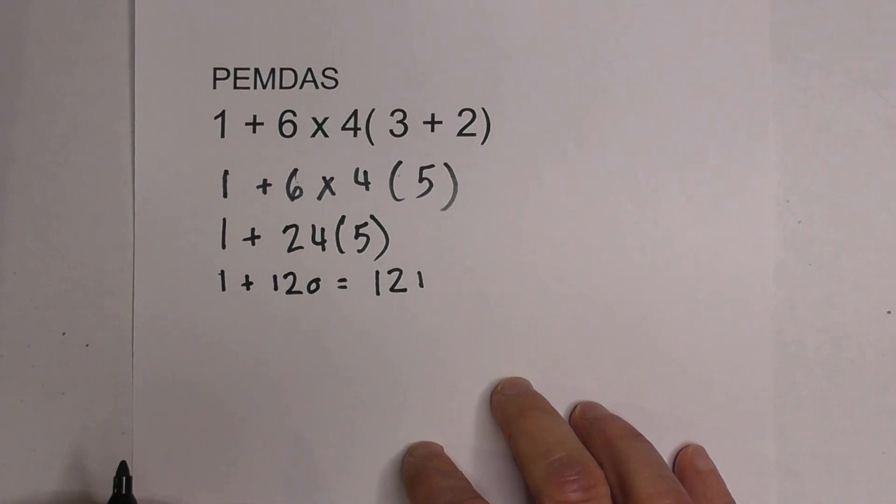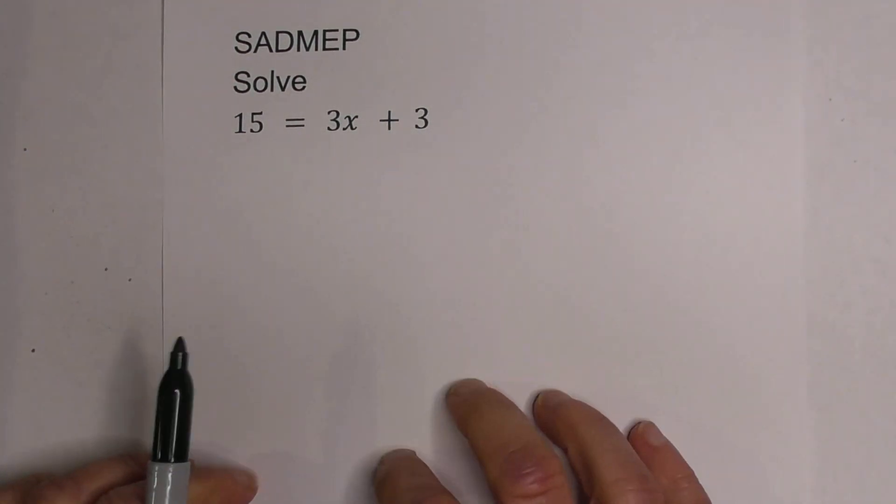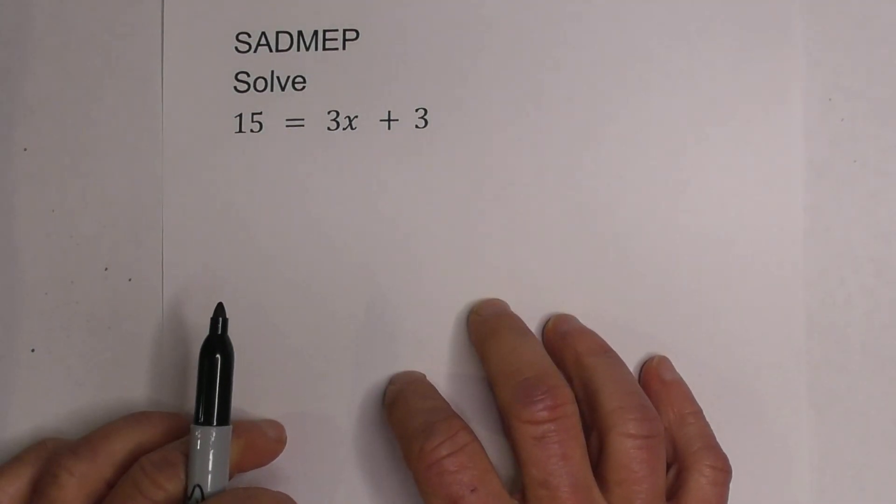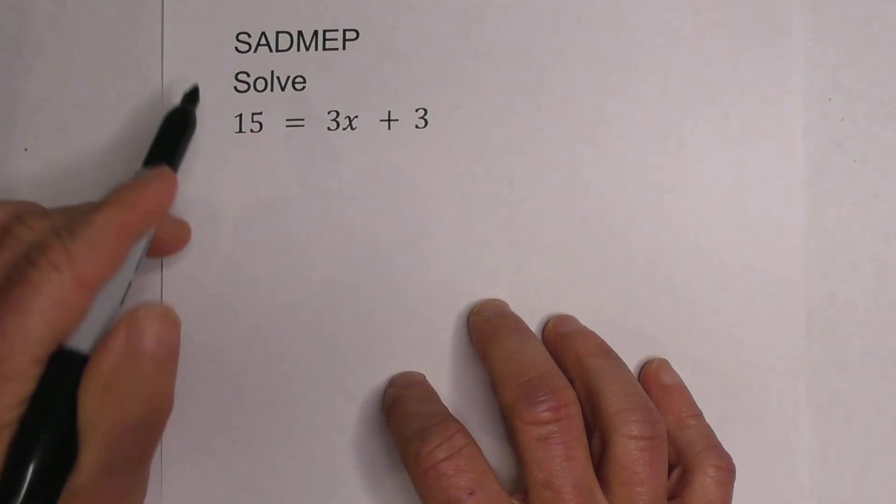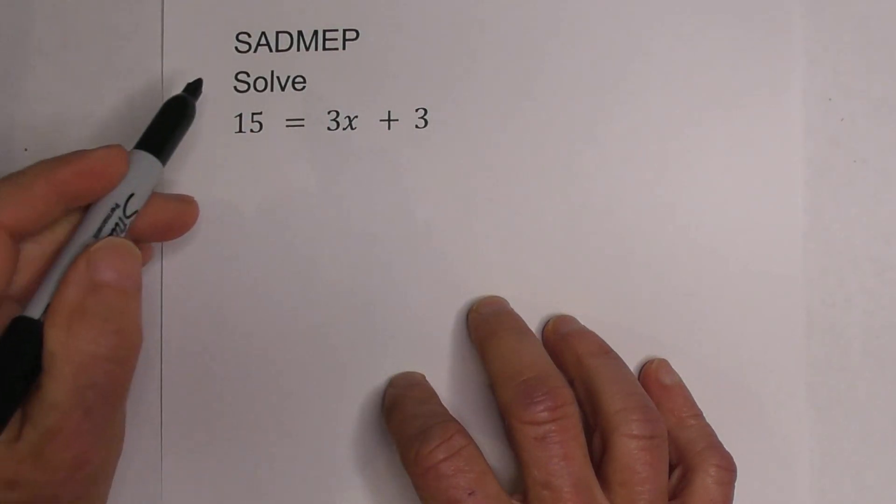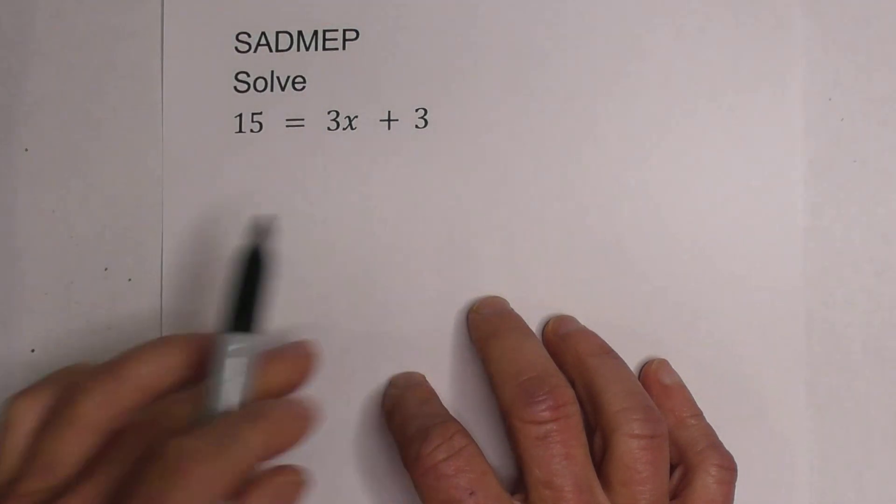Let's look at another example. Now, with this example, we have an equation. We have an equal sign, and we're trying to solve for x. So in this particular example, we're going to use a reverse operation. We're going to use SADMEP. So what we're going to do is, this time, we're going to start with subtraction or addition, and we have addition here.